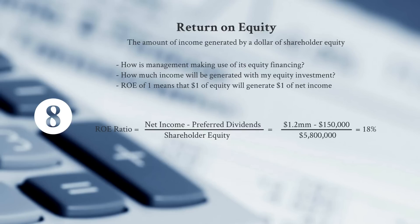ROE is calculated by taking net income minus preferred dividends — focusing on common shareholder amounts — divided by shareholder equity. In this case, $1.2 million of net income minus $150,000 of preferred dividends, divided by $5.8 million of equity, gives an 18% ROE — again, a pretty strong number.